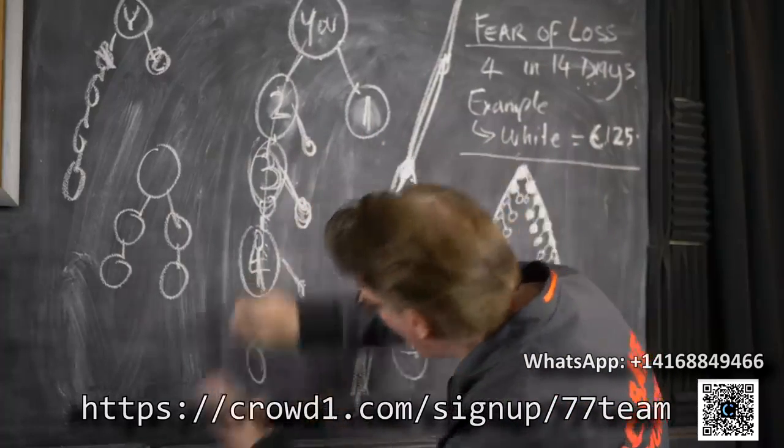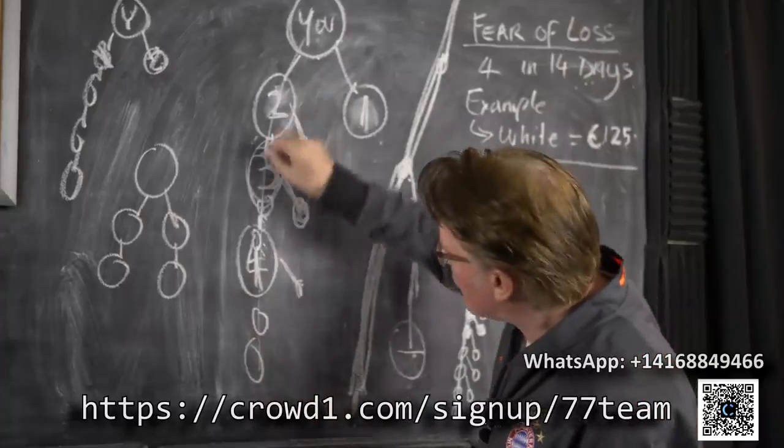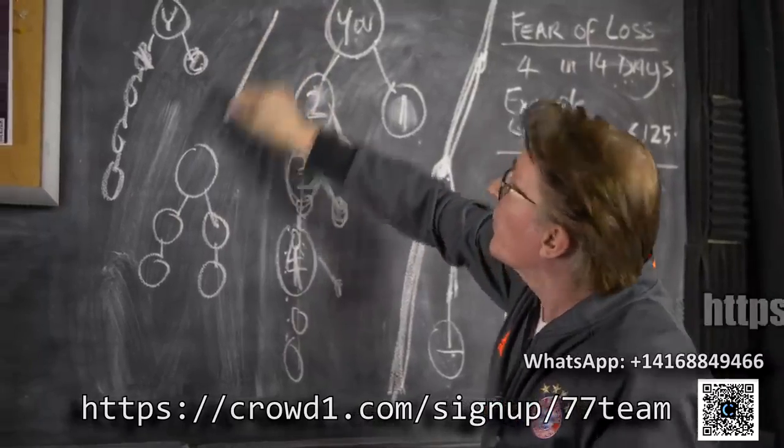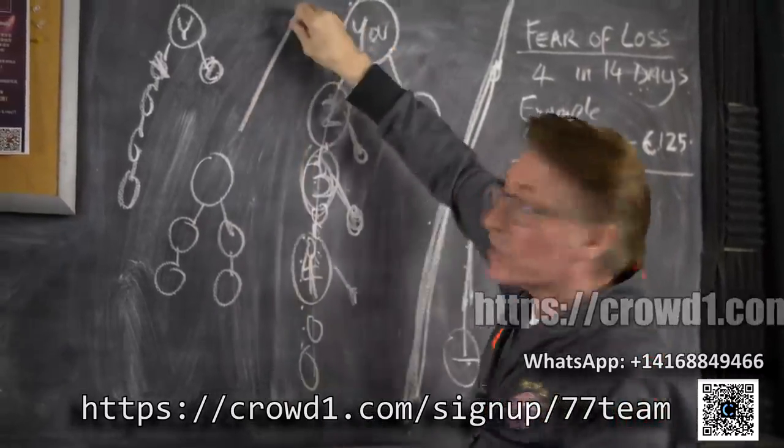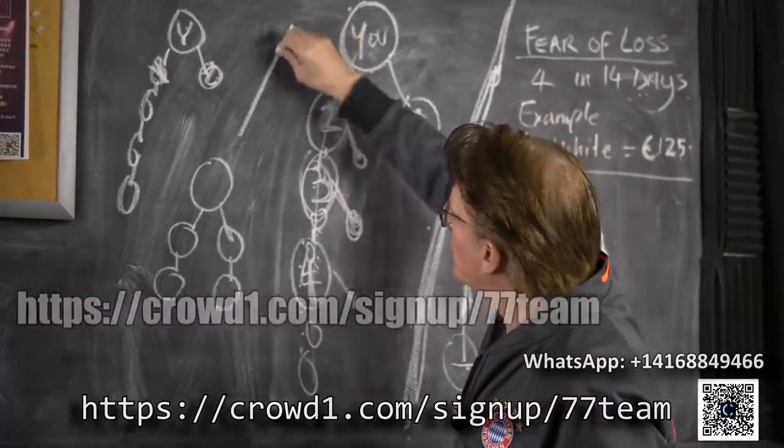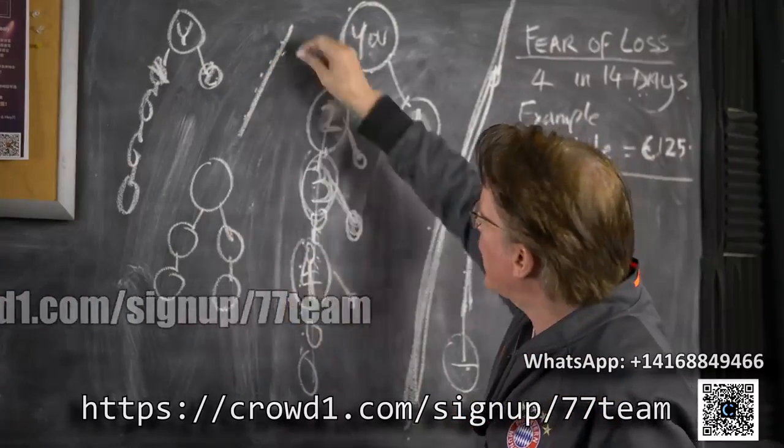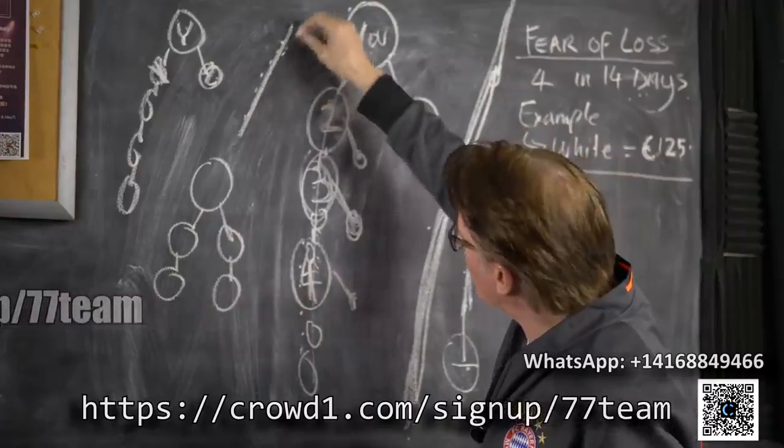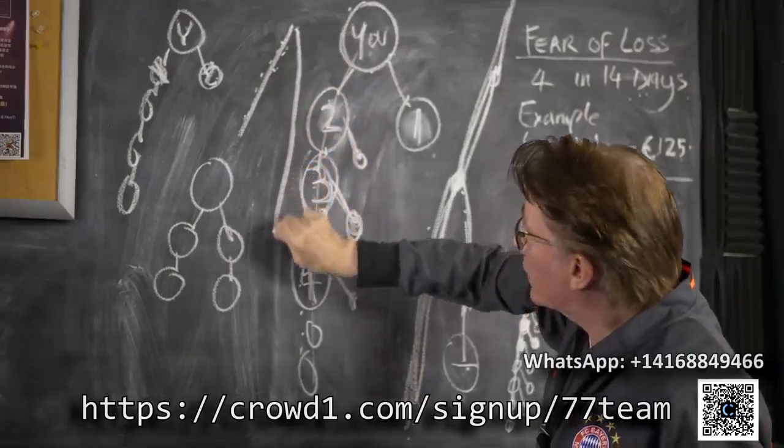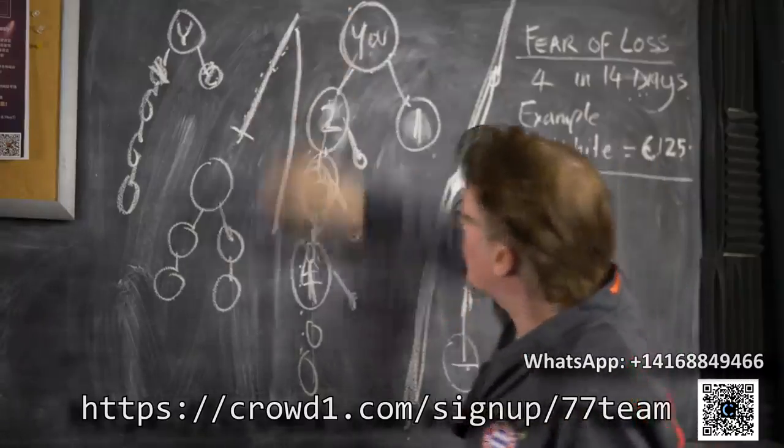And then everybody that comes in under you, start moving them in that direction. Put in one and then go left. Go left and build that left leg for a while. Get that left leg going. Then switch everybody. That's why you've got to communicate with people. Now you tell the people below you, now start bringing on other people and start moving this leg. This leg now can start growing longer and the money will start to flow through.